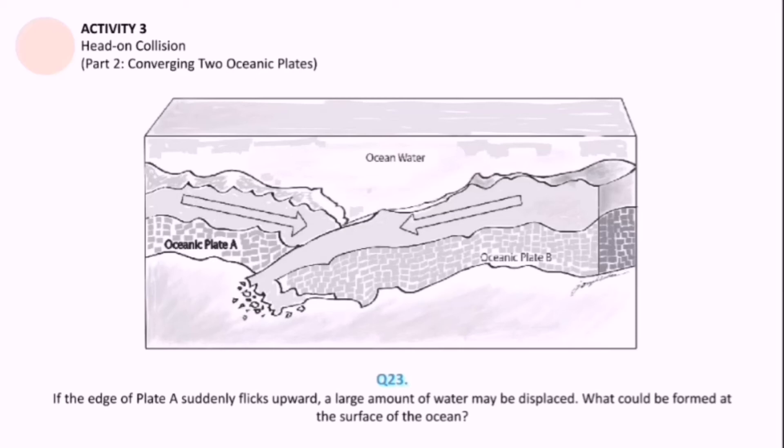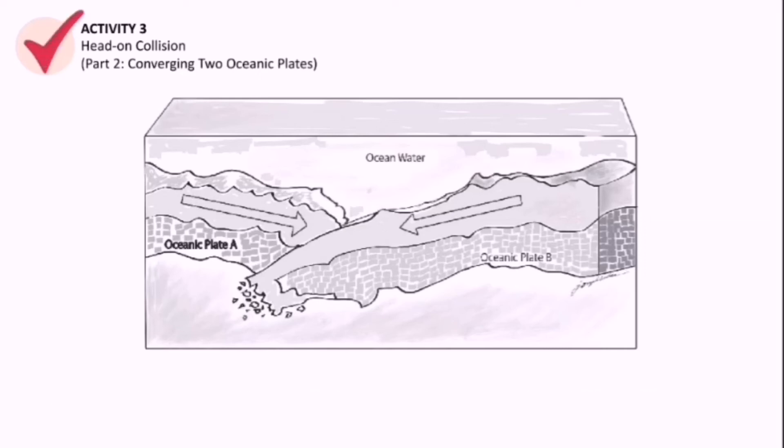If the edge of plate A suddenly flicks upward, a large amount of water may be displaced, right? So plate A is about to flick or bend upward. So yeah, it follows since it's underwater, it's going to displace some water, then what could be formed at the surface of the ocean. So that ends activity number three, head-on collision. I want you to keep your answers. And as usual, just process them because we are about to answer them through a discussion.